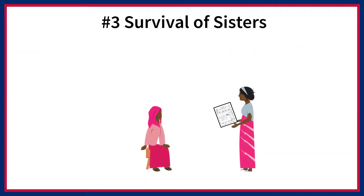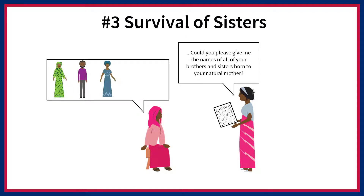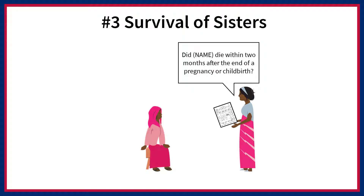Third, DHS uses information about the survival of sisters to measure maternal mortality. Women interviewed in DHS surveys are asked to list their siblings — that is, all the children born to their mother — and then asked about the survival status of all their siblings. In the case of female siblings who have died at age 12 or older, the interviewer asks whether the sister died during pregnancy, childbirth, or within the two months following delivery or end of pregnancy.